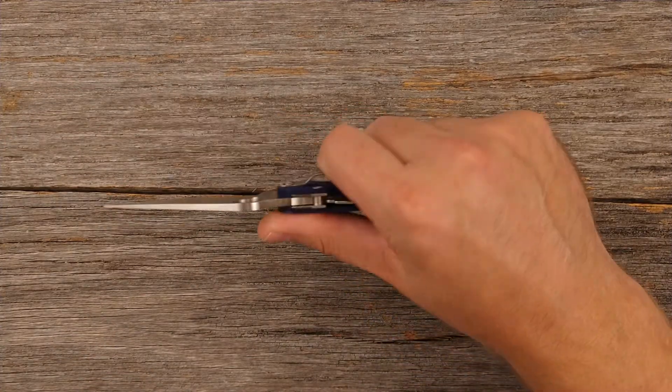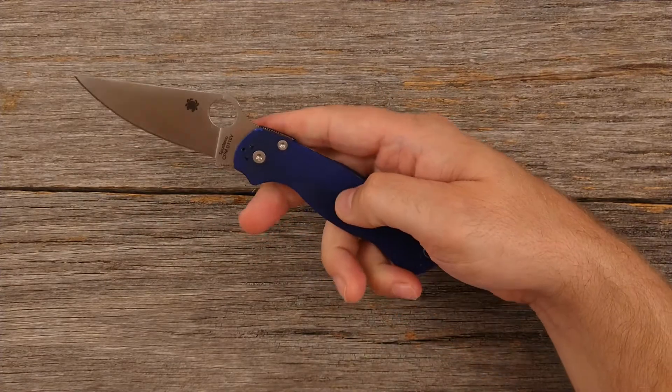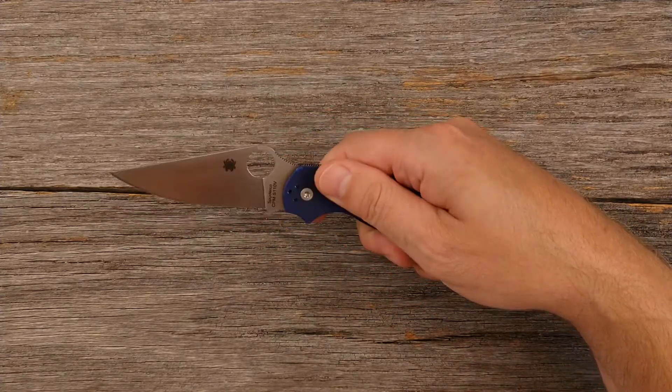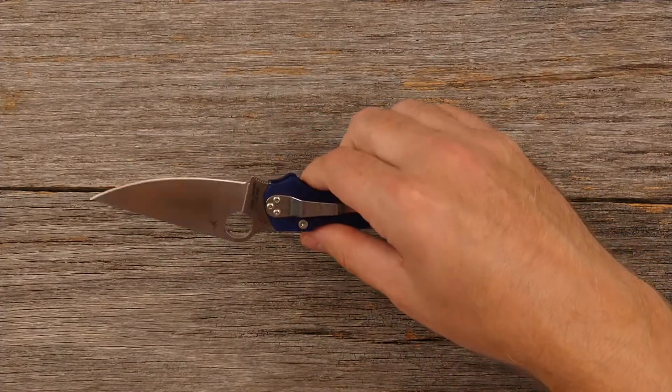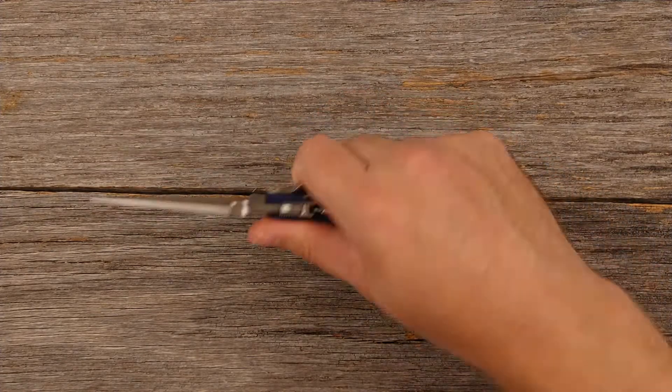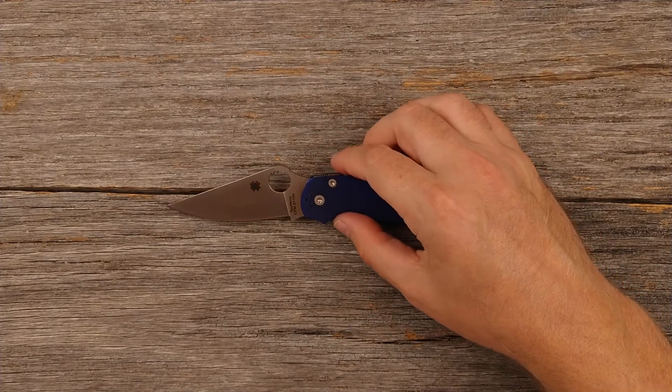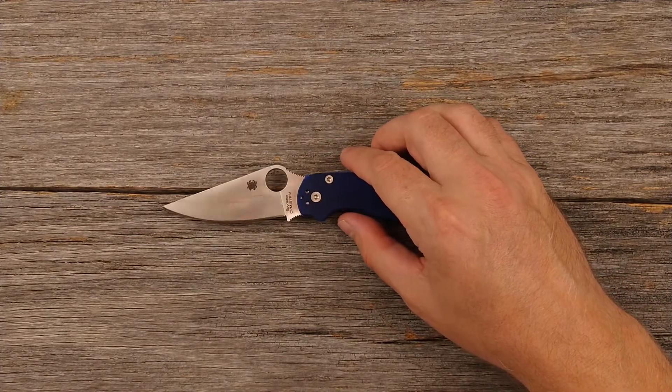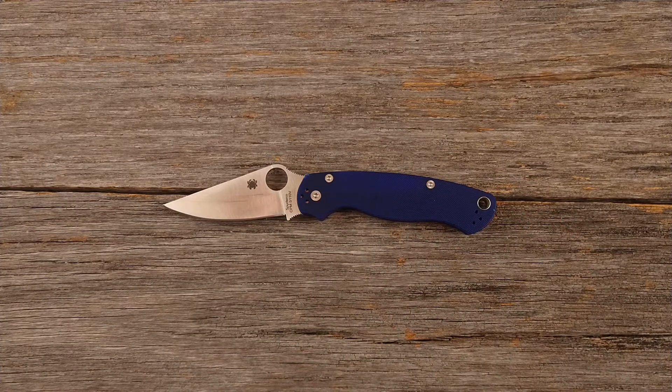The G10 handle scales are very mildly textured. So you're not looking at extremely grippy. They're not going to tear up your hand or your pocket. But there's enough texture there that it gives you grip. And even if the handle were to get a little bit wet, it's not going to be super slick because you do have that texturing in the G10.